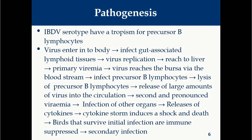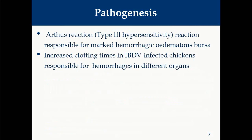Due to decreased immunity, secondary bacterial, viral, or other infections occur, leading to death of the animal. During viral replication in the bursa, antigen-antibody-complement complexes are formed and deposited in the bursa. These complexes act as chemotactic factors, attracting inflammatory cells, increasing vascular permeability, leading to edema, necrosis, hemorrhage, and large numbers of heterophil infiltration. Such reactions are known as Arthus reactions or Type 3 hypersensitivity reactions, which are responsible for the marked hemorrhagic edematous bursa.